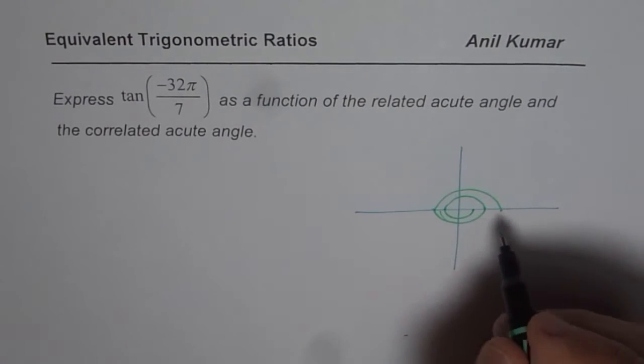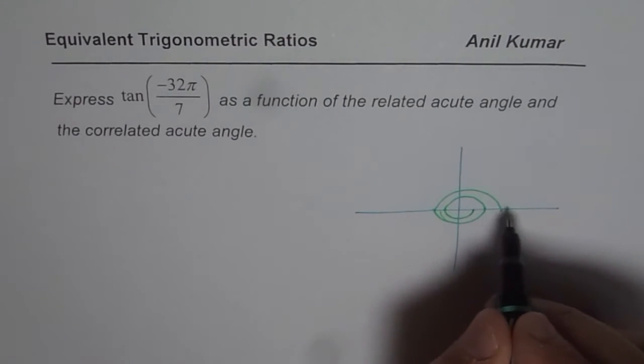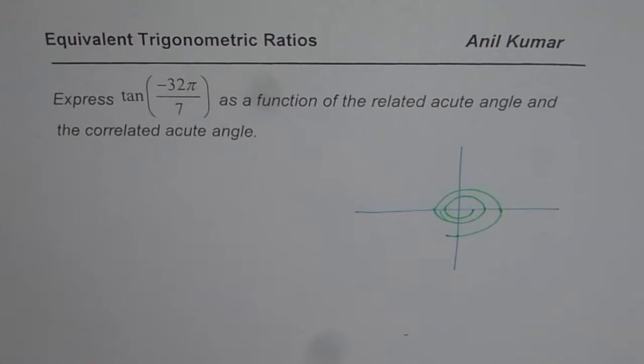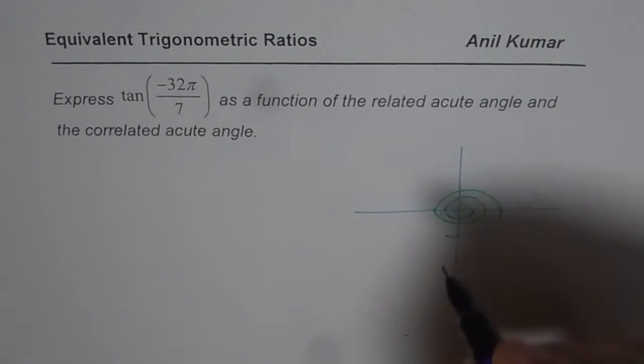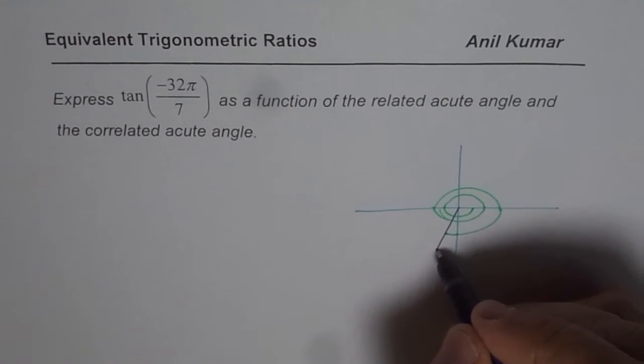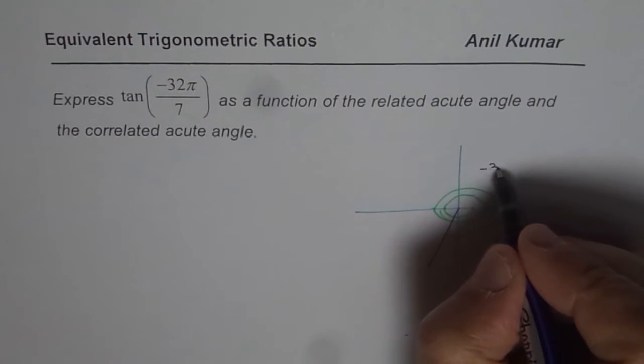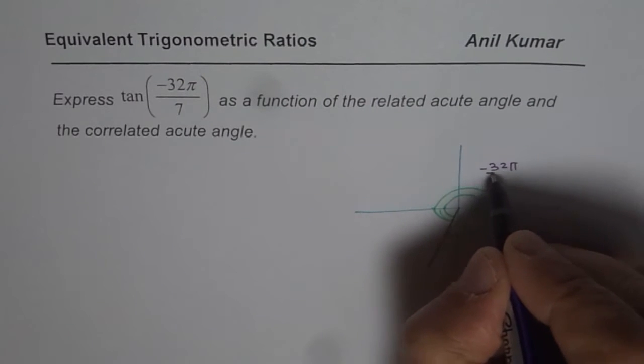You have to go 32. 32 means 4 more. Now if this π is divided into 7 portions, then it is kind of 3 and a half here. So 4 more will put you in this quadrant. So that is where you should be. That means the terminal arm is in quadrant 3. That is minus 32π by 7.